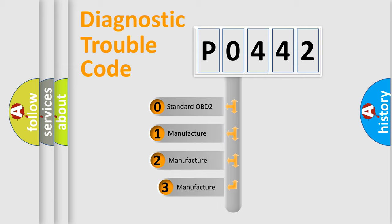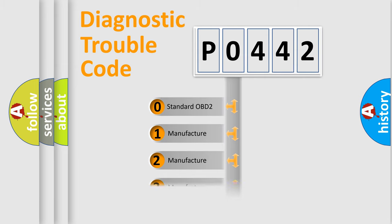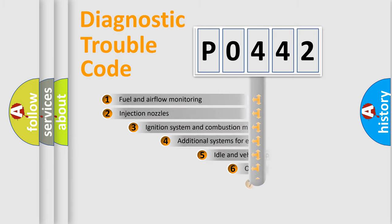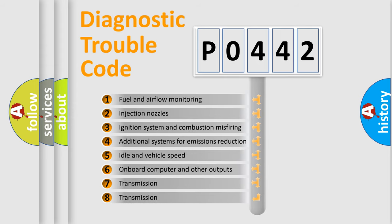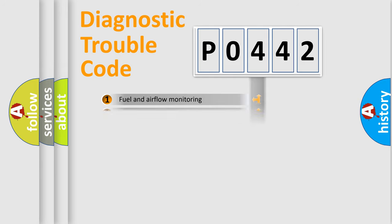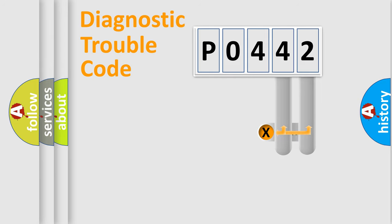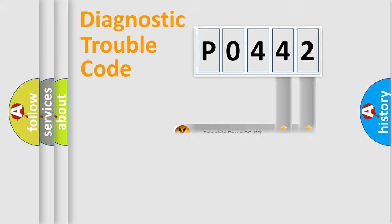If the second character is expressed as zero, it is a standardized error. In the case of numbers 1, 2, or 3, it is a more specific expression of a car-specific error. The third character specifies a subset of errors. The distribution shown is valid only for the standardized DTC code. Only the last two characters define the specific fault of the group.